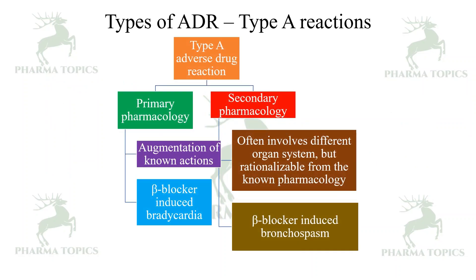Type A reactions are of two subtypes. Primary pharmacology involves augmentation of reactions — for example, beta blocker-induced bradycardia, where increasing the dose causes bradycardia. Secondary pharmacology often involves a different organ system but is rationalizable from the known pharmacology — for example, beta blocker-induced bronchospasm.